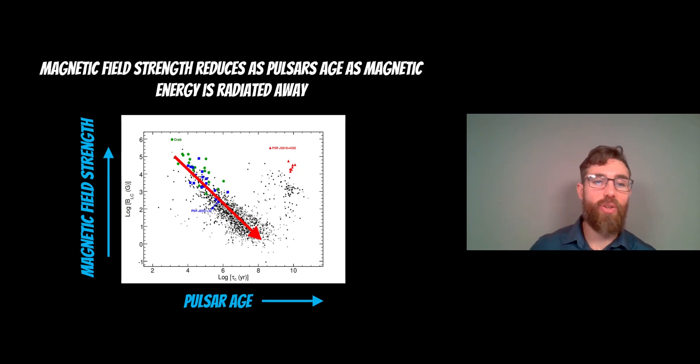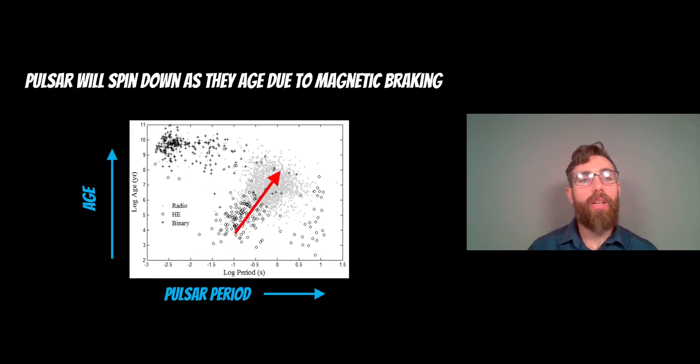They also spin down, which we know. If we look at the age and their period, the pulsar period—the time between each pulse—we would expect that to get longer as they age because they spin down. There's a general trend of most radio pulsars that the older they are, the slower they rotate due to this magnetic braking.